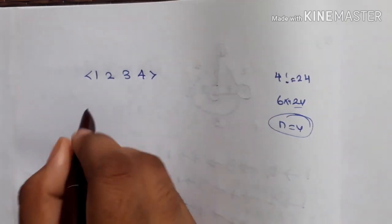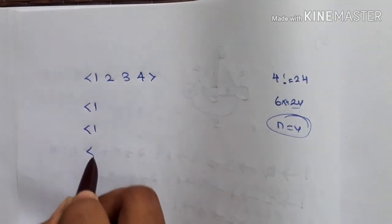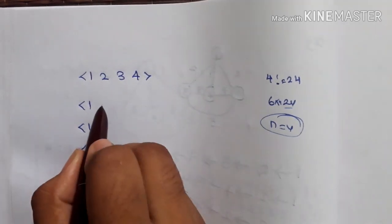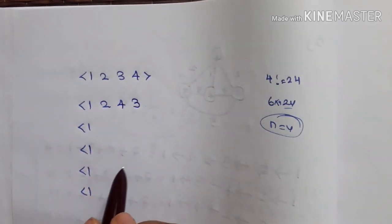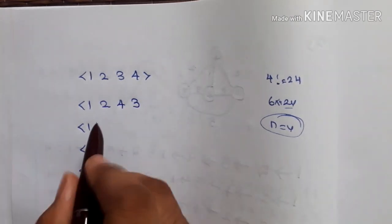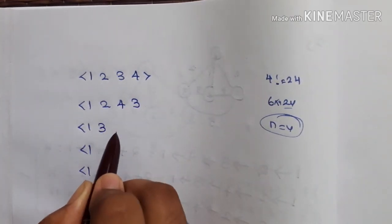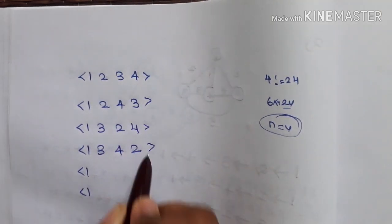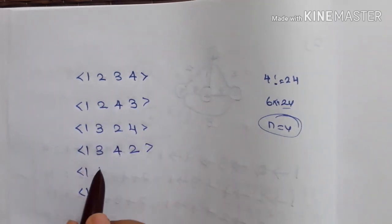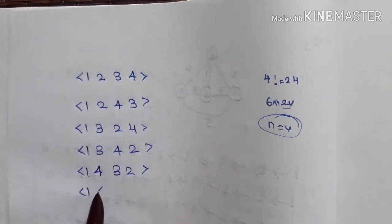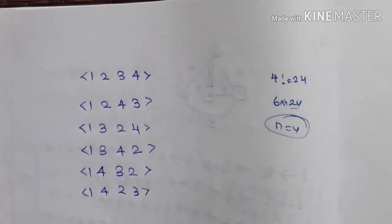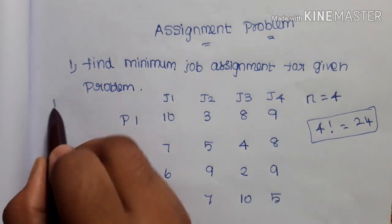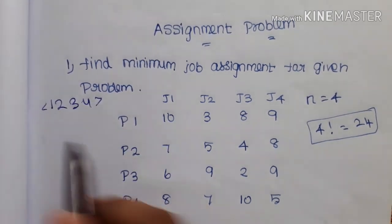So now we put N equal to 4, giving 24. We have all combinations starting with 1: first is 1, 2, 3, 4; next is 1, 2, 4, 3; then 1, 3, 1, 3; then 1, 3, 2; then 1, 4; and 1, 4.